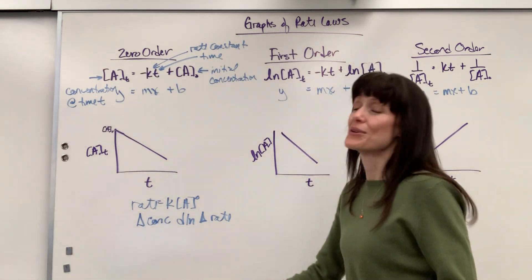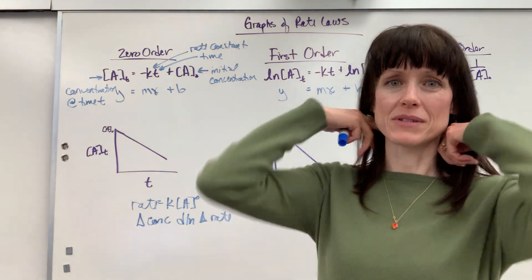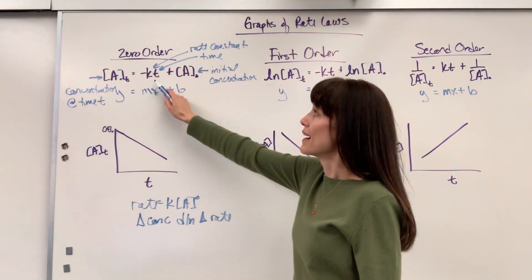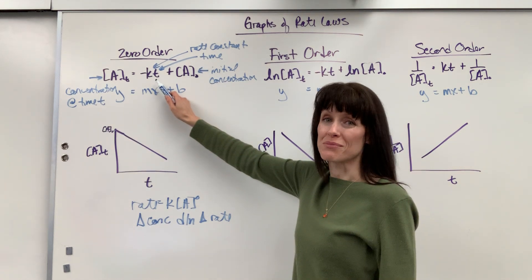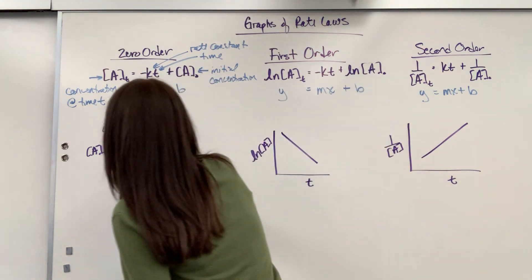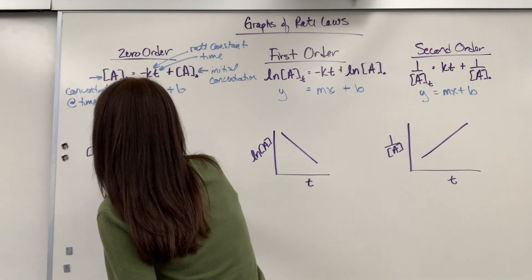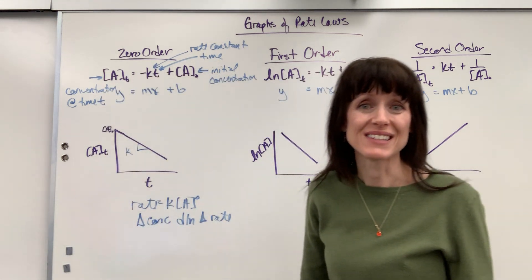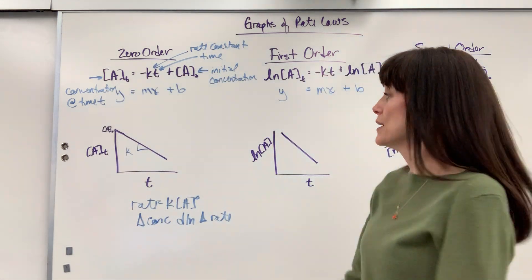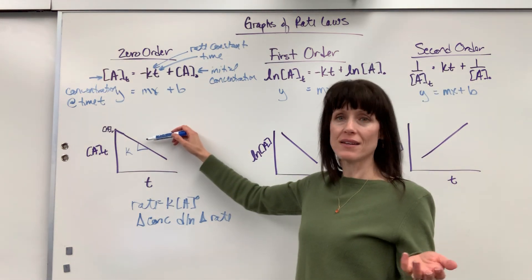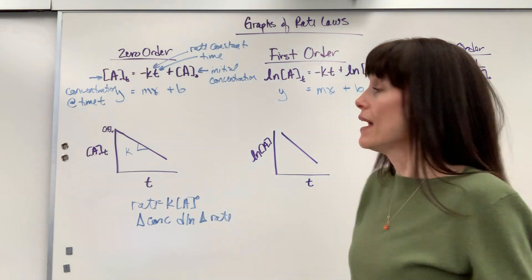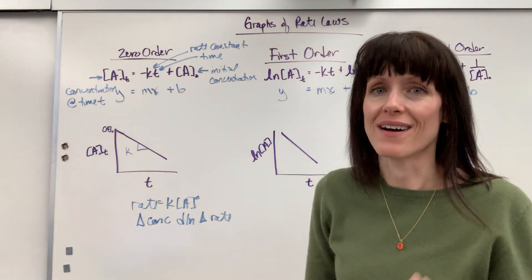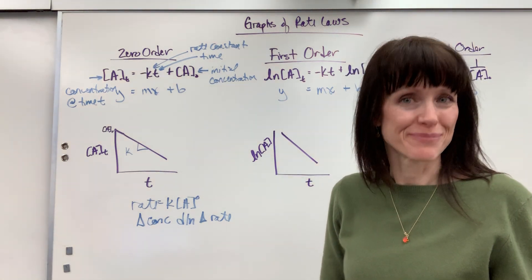What is so neat about this, one of the things that chemists love about it, is right there, M, the slope. What is the slope? It's the rate constant. So this right there is actually K, the rate constant. Pretty cool. All you have to do is rise over run, Y1 minus Y2 divided by X1 minus X2, and you just found the rate constant K by having a graph.